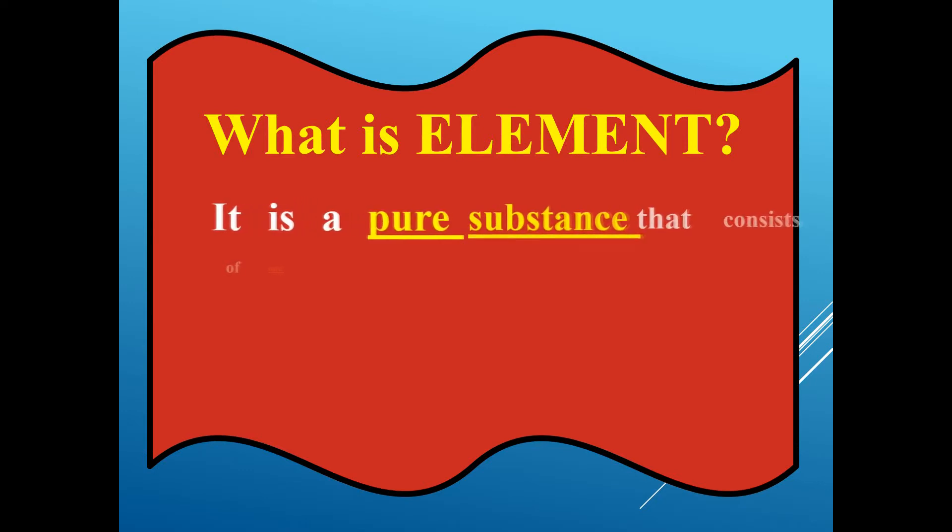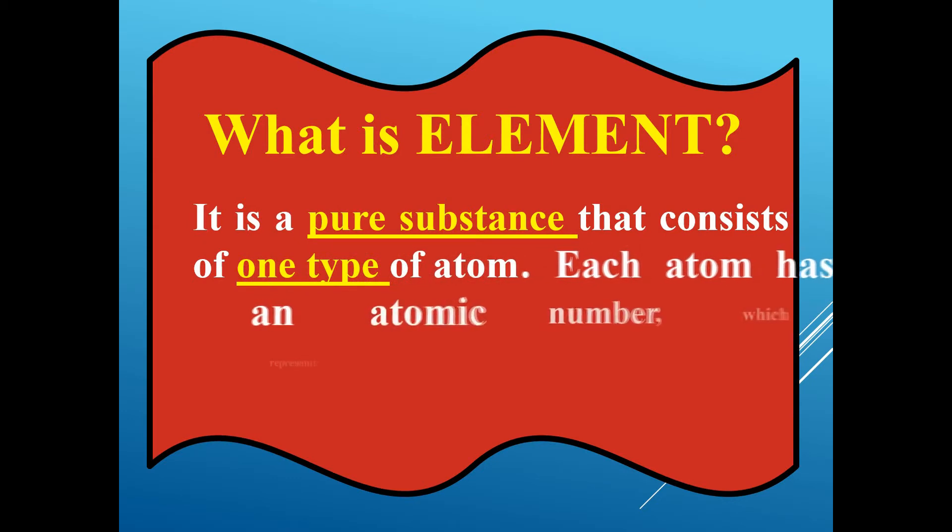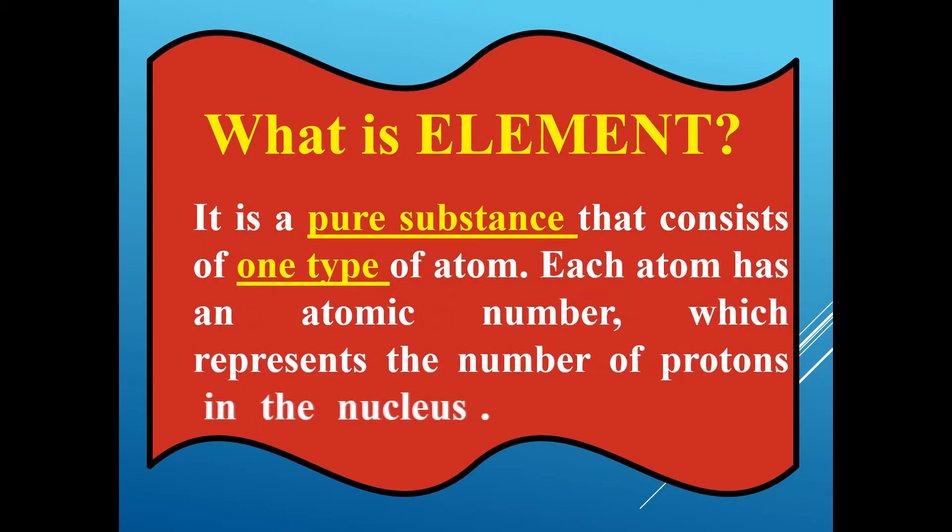We are going to define what is an element. It is a pure substance that consists of one type of atom. Each atom has an atomic number, which represents the number of protons in the nucleus.